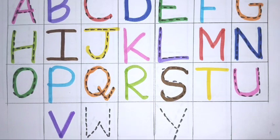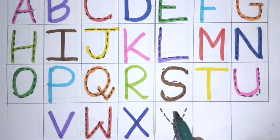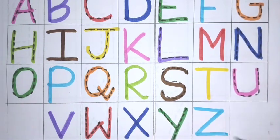V for van, W for watch, X for x-ray, Y for yellow, Z for zebra.